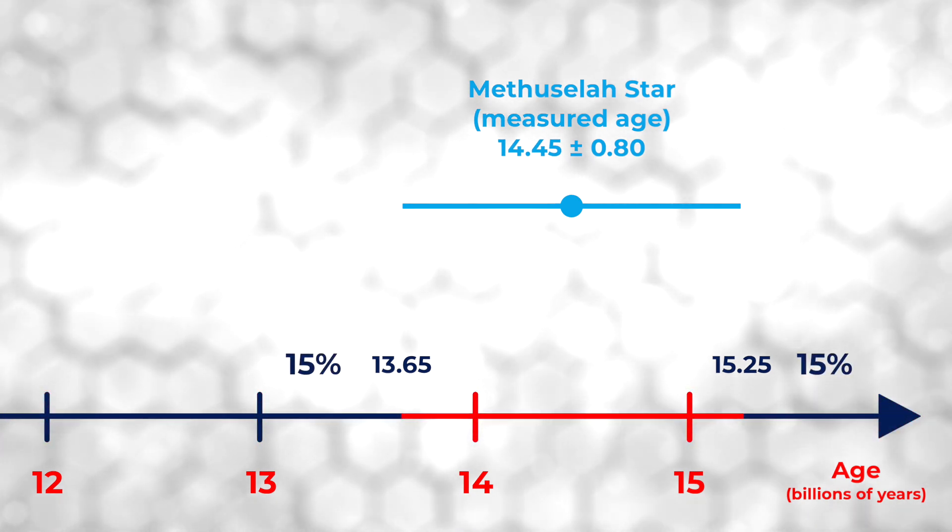That 30% split is half higher and half lower, which means that according to astronomers' best estimates, there is a 15% chance that the true age of the star is lower than 13.65 billion years. This is, of course, younger than the accepted age of the universe.